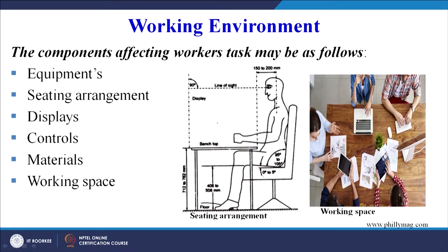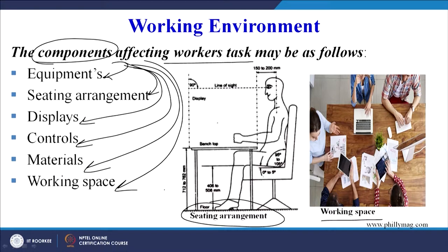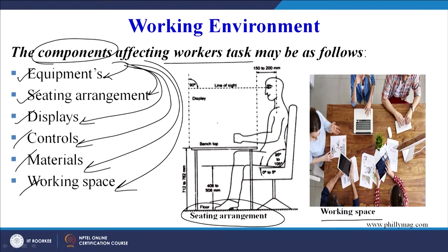The working environment must take into account the fatigue or strain a worker acquires in performing a task, and must mitigate those effects. Productivity must increase, unbearable noise must be avoided, and insufficient light leading to poor visibility, smoke, fumes, and uncleanliness must also be addressed. The components affecting a worker's task include: equipment, seating arrangement, displays, controls, materials, and working space — all of which must be designed as per established rules, regulations, and guidelines.